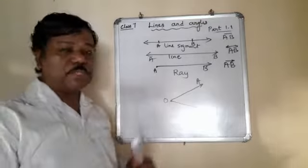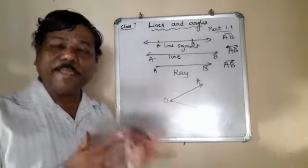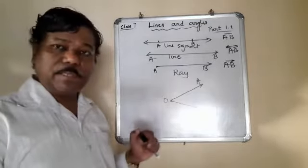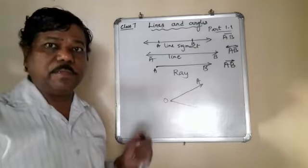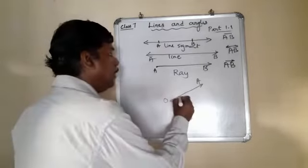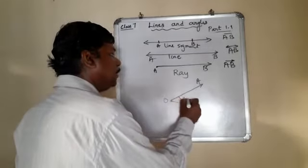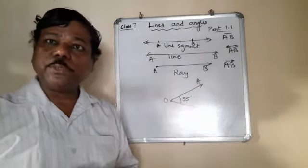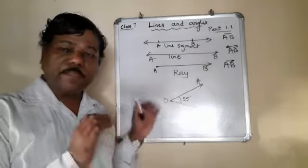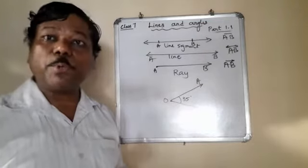We can measure this inclination, the angle between two rays emanating from the same origin or same point. This is having suppose 35 degrees. That is measured by a device which is used to measure angles. That device is named as protractor.